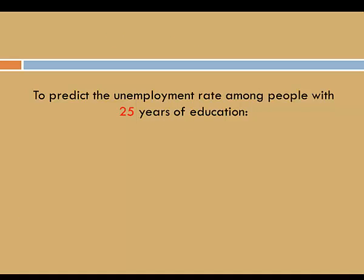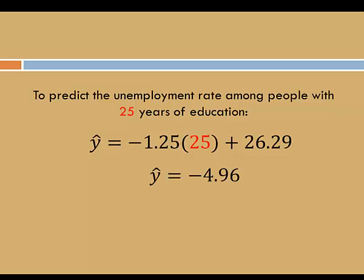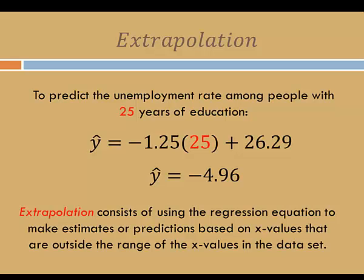We can use the regression equation to predict the unemployment rate for any number of years of education. In this case, we'll predict the unemployment rate among people with 25 years of education. Once again, I'll replace the x variable. 25 times negative 1.25 plus 26.29 is negative 4.96. That would mean that the predicted unemployment rate for people with 25 years of education is negative 4.96%, which doesn't make any sense. This is an example of extrapolation — using the regression equation to make estimates based on x values outside the range of the data set. We definitely want to avoid extrapolation.